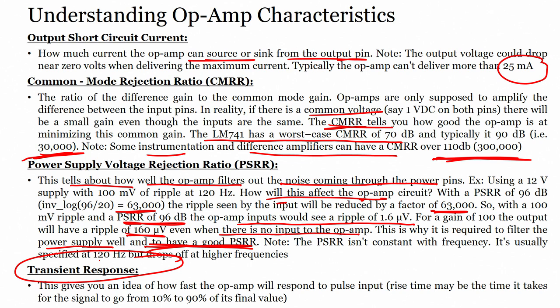Transient response gives an idea of how fast the op-amp will respond to a pulse input. Rise time is the time it takes for the signal to go from 10 percent to 90 percent. When I apply an input, how fast do I see the change in the output — a lag of few milliseconds — that is the transient response. With a faster transient response, I should continuously be able to see the change in the output voltage.